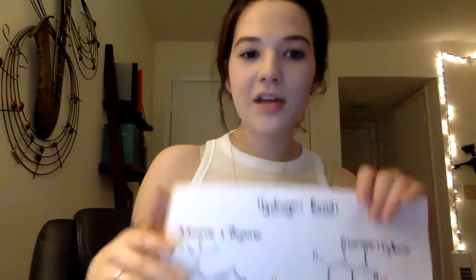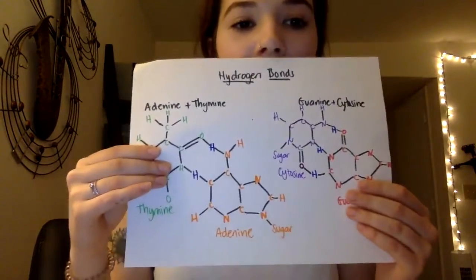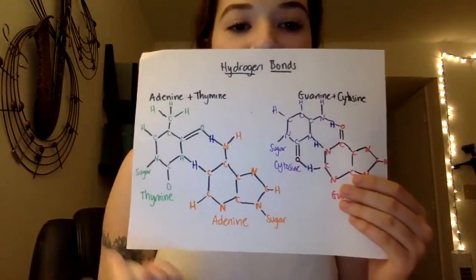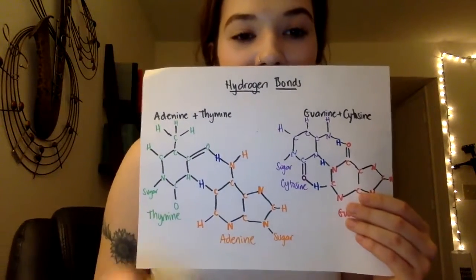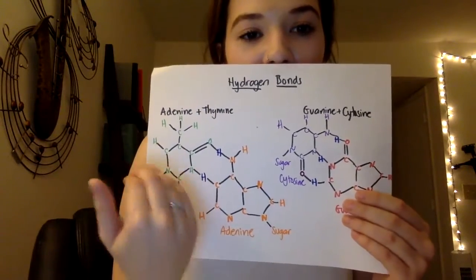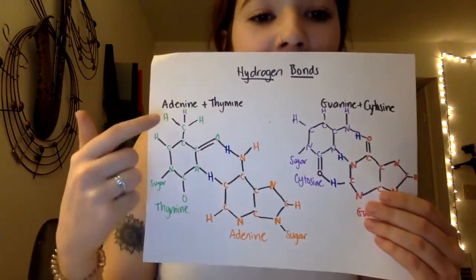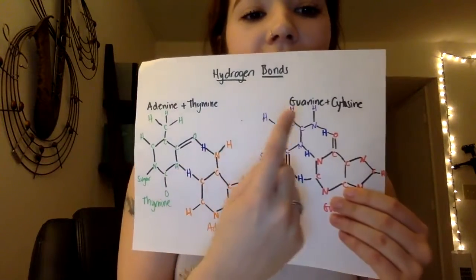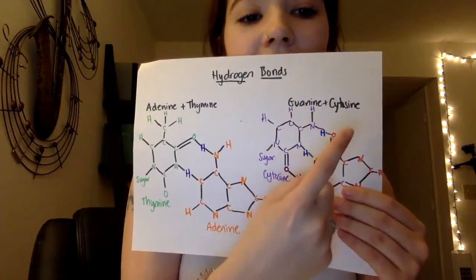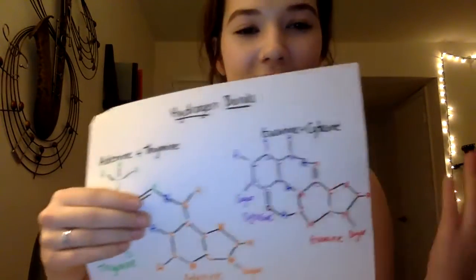Then we have hydrogen bonding, which is how nitrogenous bases bind together. This is when positive and negative attraction occurs between partially charged molecules. Adenine and thymine have two hydrogen bonds, and guanine and cytosine have three, and this is a very weak form of bonding.